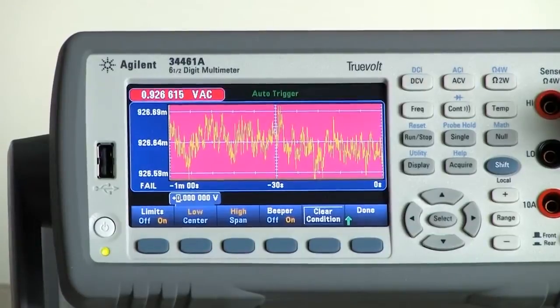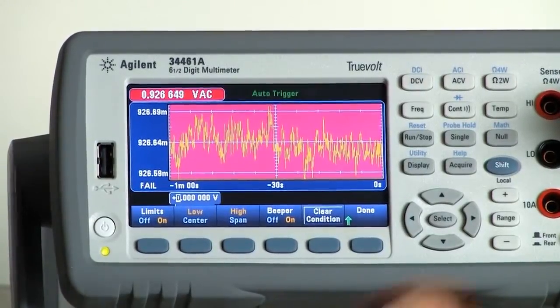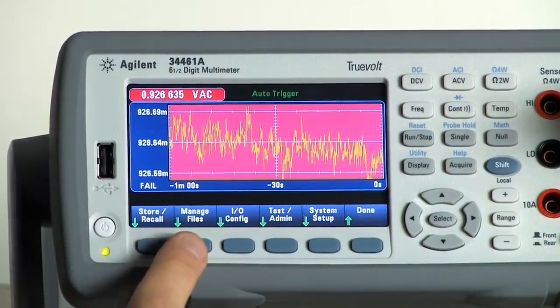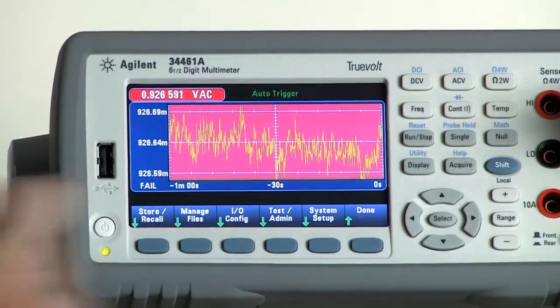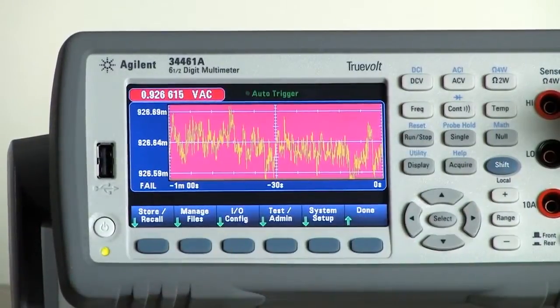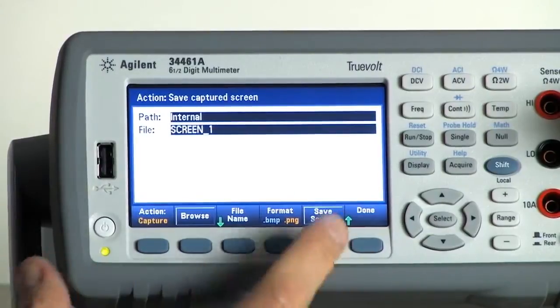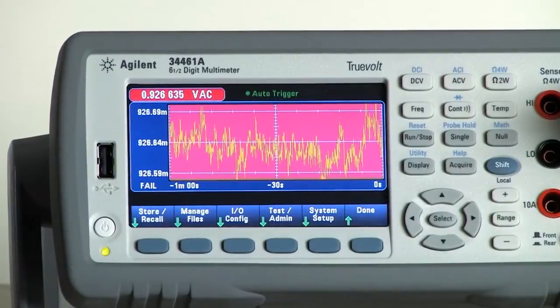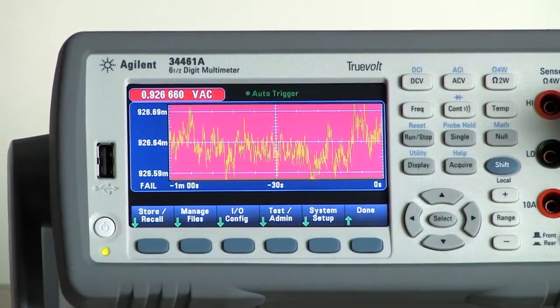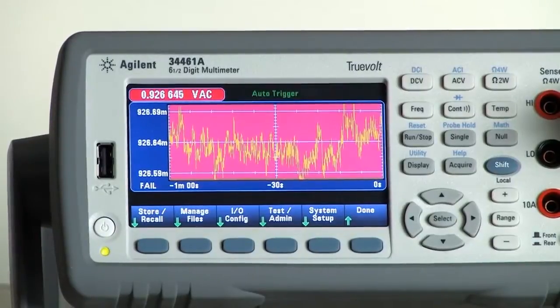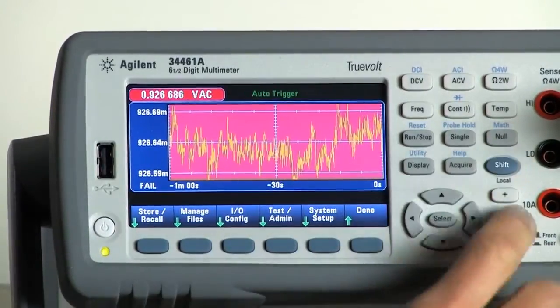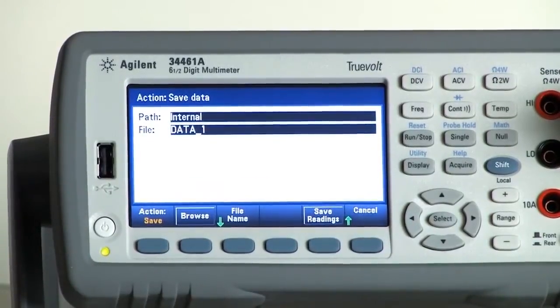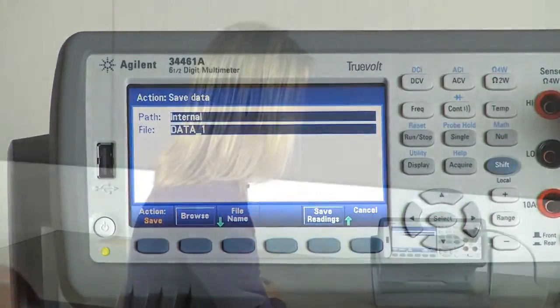The final thing I wanted to note, you have all these display views. You can very easily choose to save a screenshot at any time. So if I want to capture this screenshot, I do shift, utility, and I hit manage files. And at any point in time I can choose to save the screenshot. Likewise, if I want to save the data within the reading history to the internal memory or to a USB thumb drive, you can acquire the data and choose to save readings at any time. And you can save it on internal memory or on a USB thumb drive.